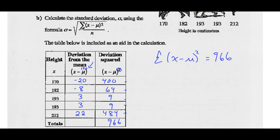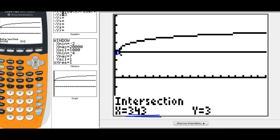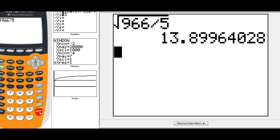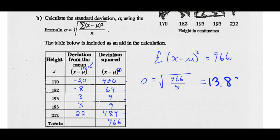So in my formula to find the standard deviation, I want the square root of that sum — 966 — divided by 5. Go on your calculators and figure out the square root of 966 divided by 5. That's going to be our standard deviation. We get the square root of 966 divided by 5, which equals 13.8996 — so our standard deviation is approximately 13.9.